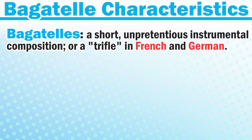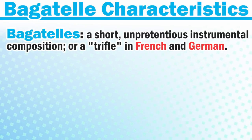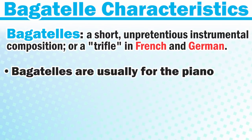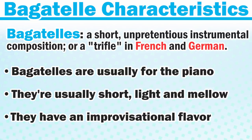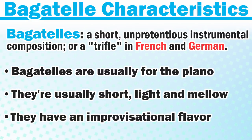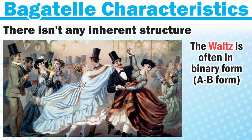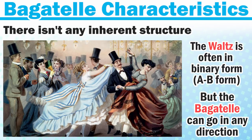Let's start with the definition of a musical Bagatelle. It literally means a short, unpretentious instrumental composition — or a trifle — in French and German. Here are some of the characteristics: Bagatelles are usually for the piano, although we'll listen to some exceptions. They're usually short, light, and mellow, and they have almost an improvisational flavor. An interesting thing about the Bagatelle that differentiates it from other more formal forms is that there isn't any inherent structure. The waltz, for example, is often in binary form — AB form — but the Bagatelle can go wherever the composer desires. There's no set formula.